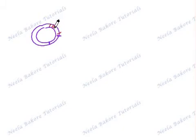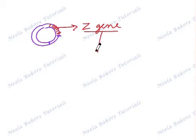So we are talking about a particular gene called Z gene and it is responsible for producing an enzyme. This enzyme is called beta galactosidase.